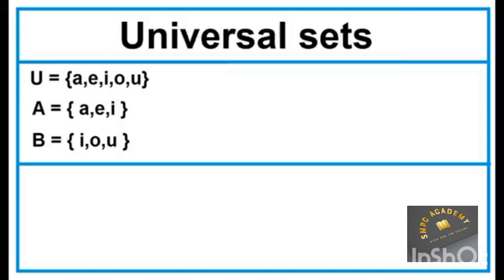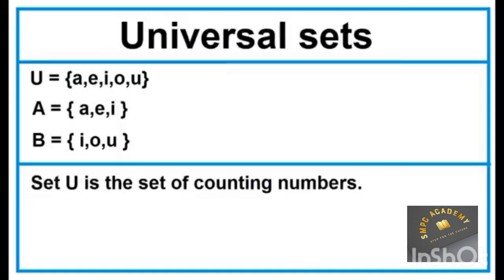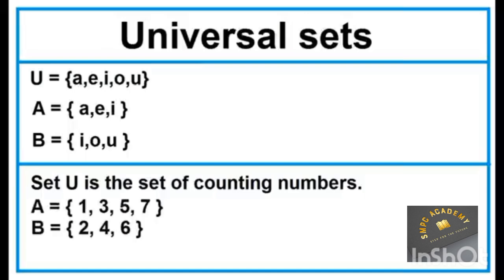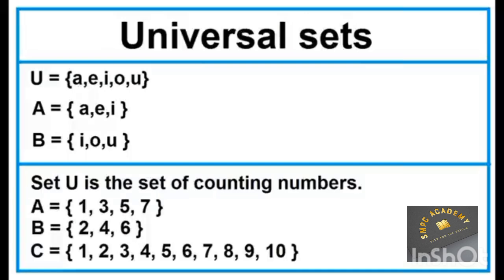Another example — Set U is the set of counting numbers. Sets A, B, and C are proper subsets of Set U, because a universal set contains all the elements in a particular problem.